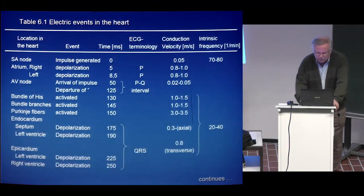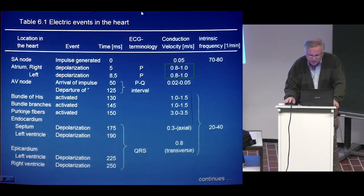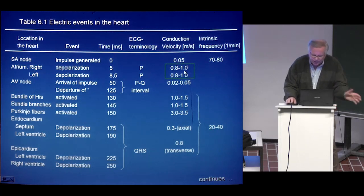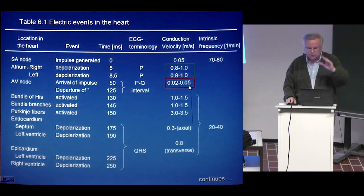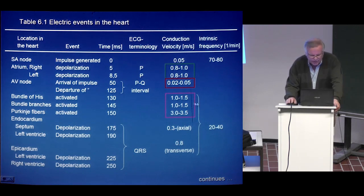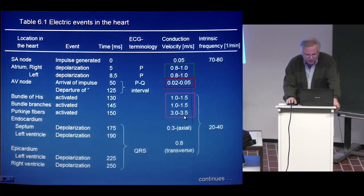Some numbers: the conduction velocity in atrial muscle is about roughly one meter per second. In the AV node, the activation proceeds very slowly — about two to five centimeters per second — which causes an important delay there. In the bundle of His, about one to one point five meters per second. But in Purkinje fibers, three to three point five meters per second. This is all very important, and I will come to this again.